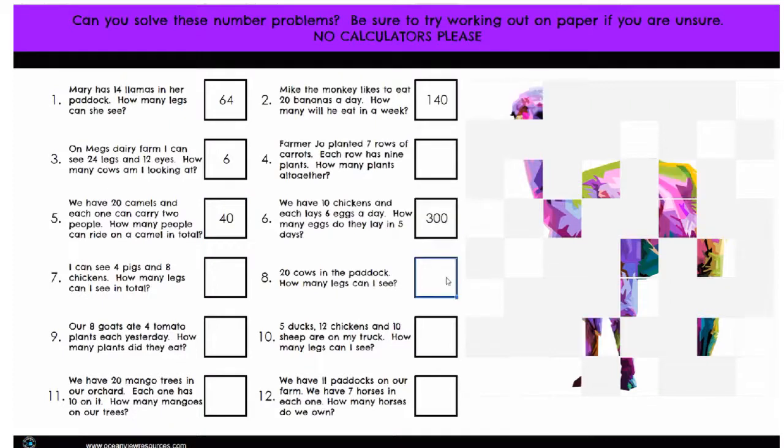Ideal for distance learning, this self-checking multiplication facts activity was made using Google Sheets. Learning goals are to develop automaticity with multiplication facts from 0 to 12.